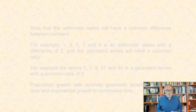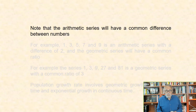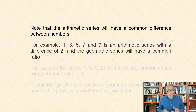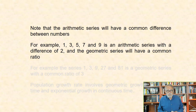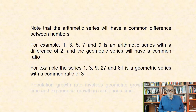Note that the arithmetic series will have a common difference between numbers. For example, 1, 3, 5, 7, and 9 is an arithmetic series with a difference of 2. And the geometric series will have a common ratio. For example, the series 1, 3, 9, 27, and 81 is a geometric series with a common ratio of 3.